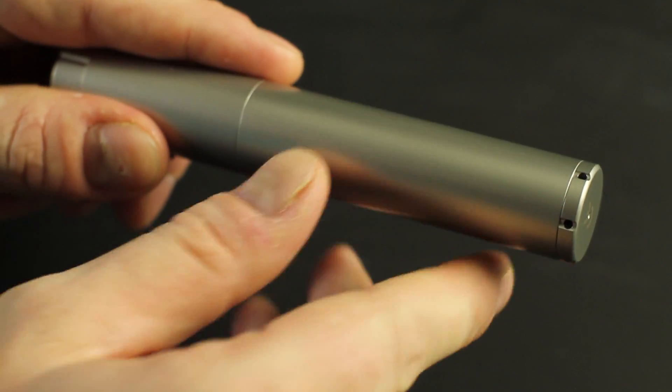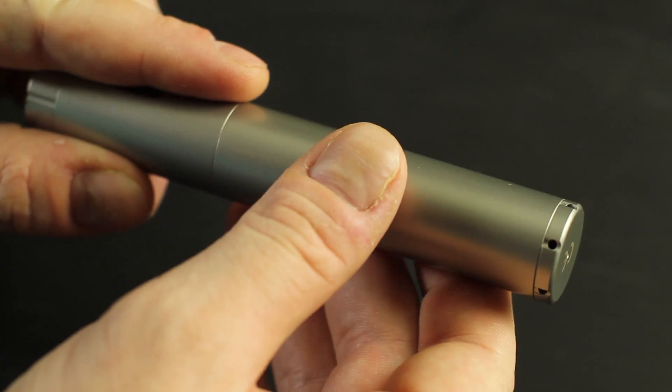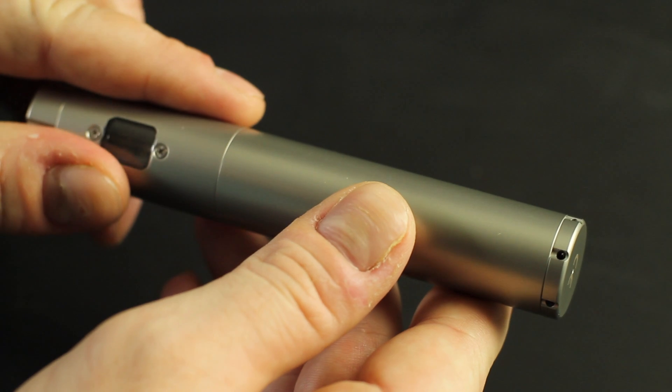Next is ventilation. Any device that you're using with a removable battery has vent holes in the actual device itself. This particular mod has vent holes on the bottom, so just make sure those vent holes are wide open so that your battery doesn't overheat.